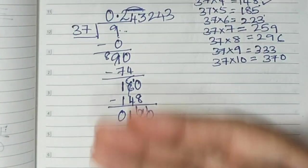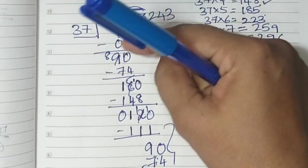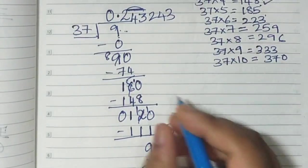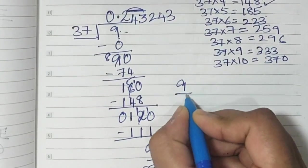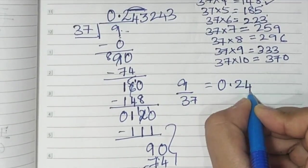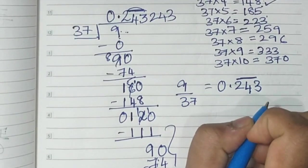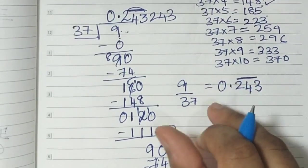We stop it at this particular because again 243 will come. You just go on doing it, 243 will repeat itself. Because again, you want to get 9 after particular 4 steps. How do we write this? 9 upon 37 is equal to 0.243. Since 243 is repeating, we put a bar on top. Because it is repeating.